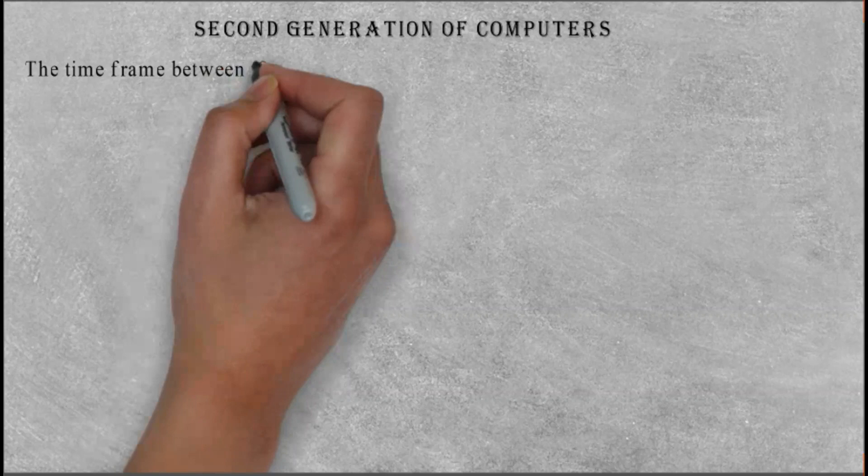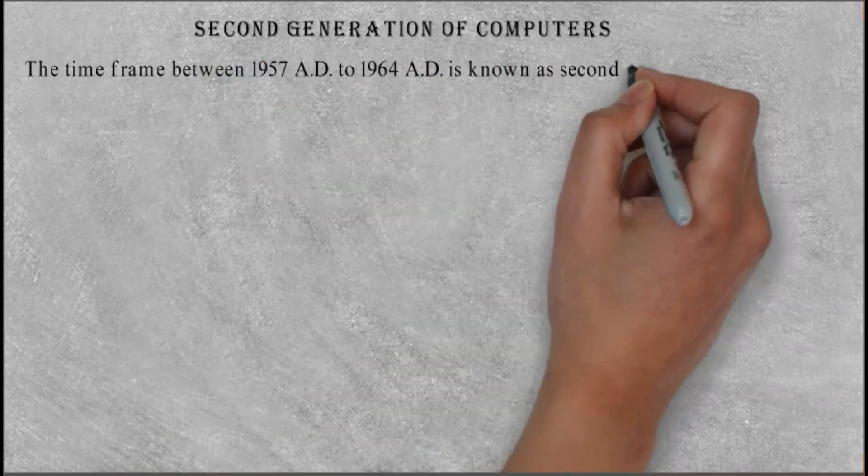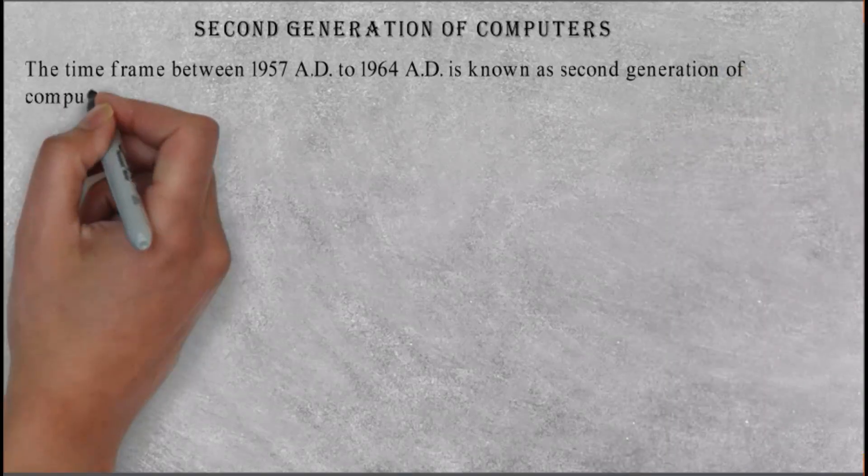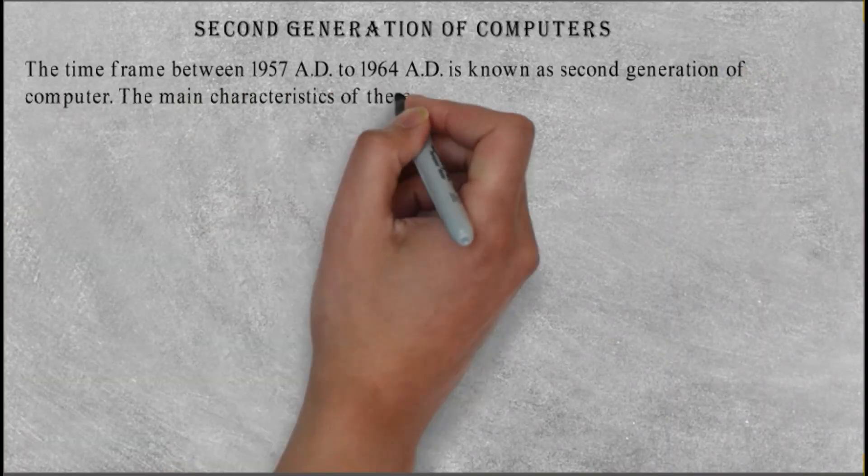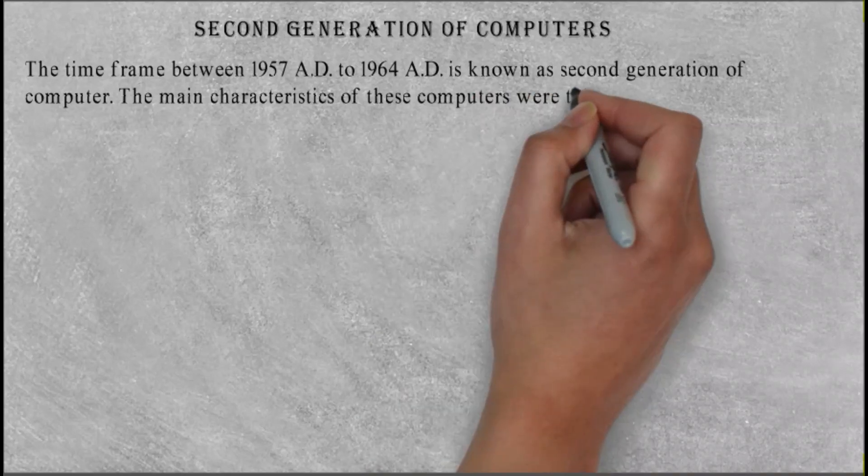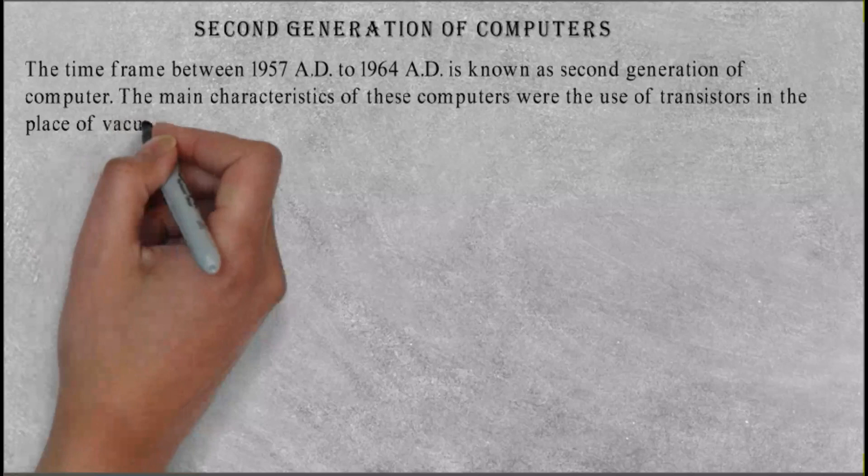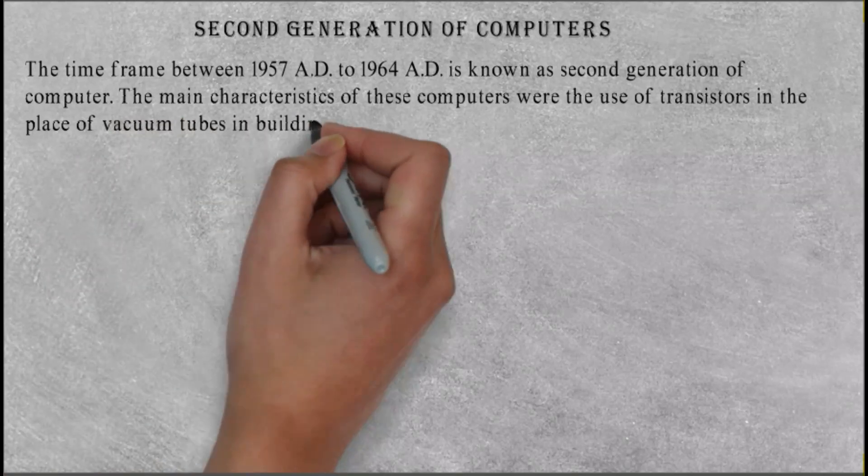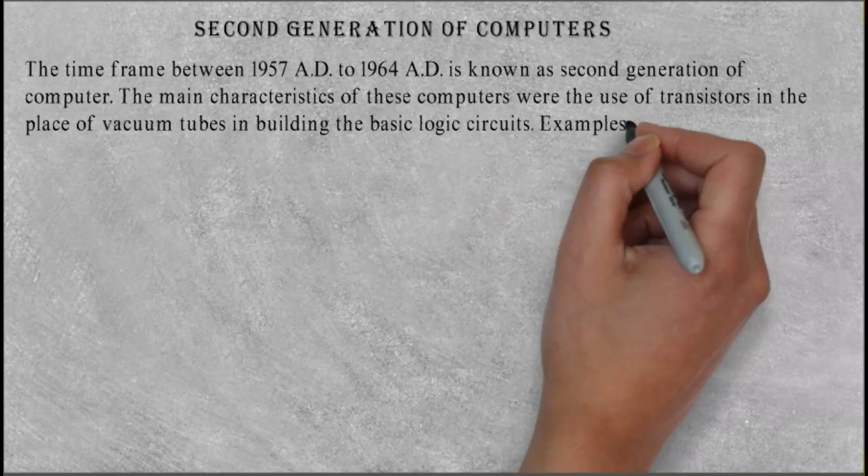Second generation of computers: The time frame between 1957 AD to 1964 AD is known as second generation of computer. The main characteristics of these computers were the use of transistors in the place of vacuum tubes and building the basic logic circuits. Examples: IBM 1401, IBM 1920, etc.